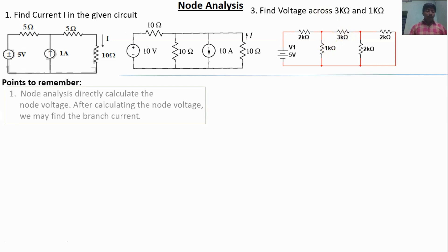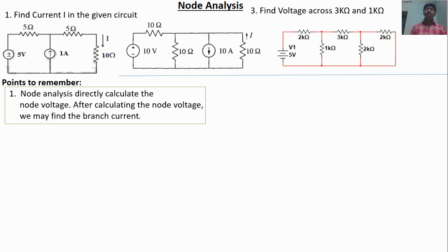Let's remember the node analysis. What is the difference between node and mesh analysis? Node analysis directly calculates node voltage. After calculating node voltage, we may find any circuit parameters — branch current, voltage across an element, or any other. But mesh analysis directly calculates the individual loop current. After calculating the loop current, we may find any parameters.